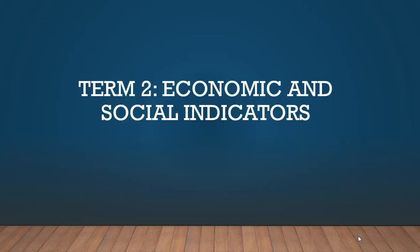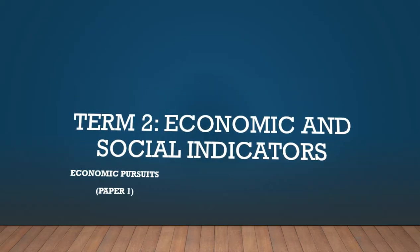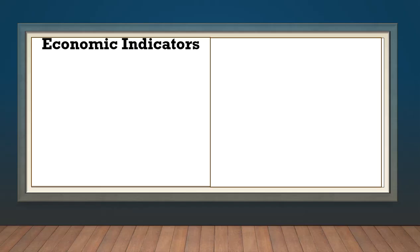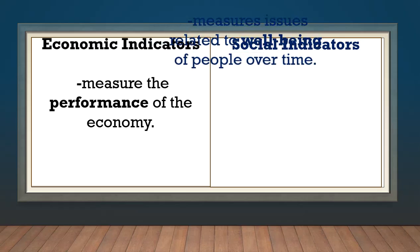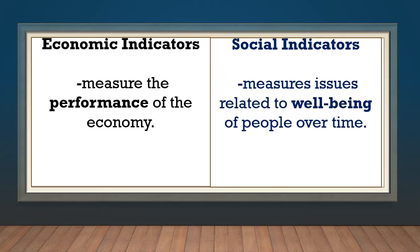Welcome to Economic and Social Indicators. Let's look at the difference between the two. Economic indicators measure the performance of the economy, whereas social indicators measure issues related to the well-being of people over time. Remember, social comes from society — so how is society doing? Social indicators measure issues related to the well-being of people over time.